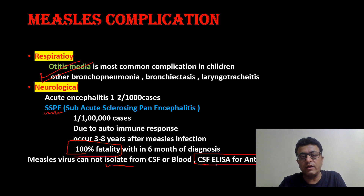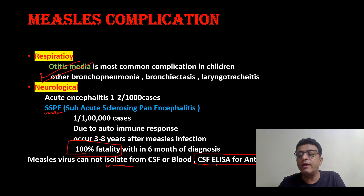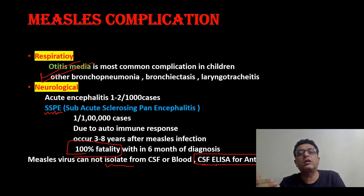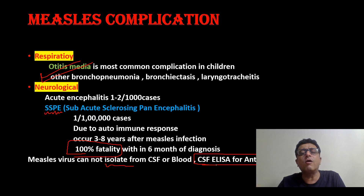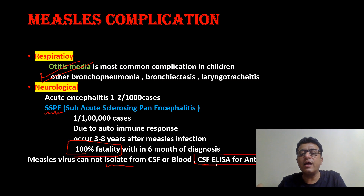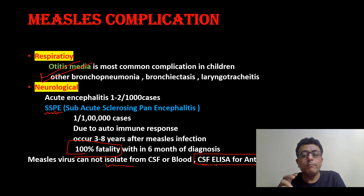This same pattern applies to mumps: incubation period, spread of infection, classical features like parotid swelling — unilateral or bilateral — and complications. Commonest complication of mumps in children is aseptic meningitis; in adults it is orchitis. For each infectious disease — chickenpox, mumps, diphtheria — you need to remember the incubation period, clinical features, and complications. Each infectious disease takes only three to four minutes to cover in three to five points.